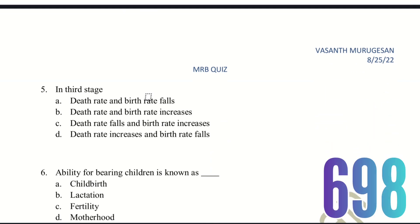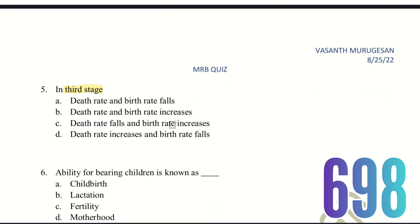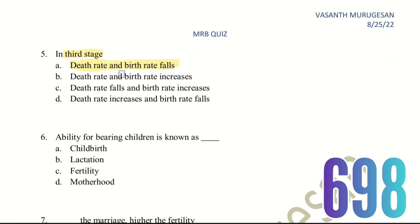Fifth question: in the third stage, what happens? The choices are: Death Rate and Birth Rate falls; Death Rate and Birth Rate increases; Death Rate falls and Birth Rate increases; Death Rate increases and Birth Rate falls. The third stage is the Late Expanding Stage. In the Late Expanding Stage, Death Rate and Birth Rate both fall.